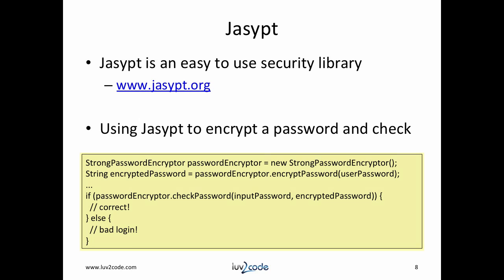In this code snippet, you simply create an instance of a StrongPasswordEncryptor and then you can encrypt the password. Once it's encrypted, you can check the password against whatever the user entered and that given encrypted password. If it's correct, you can log the user in; if not, you'd show a bad login message. You'll see this in the code I'll show you in a second.